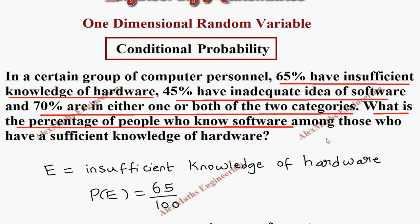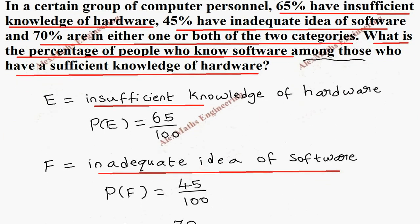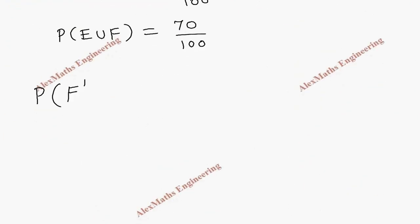Among those who have a sufficient knowledge of hardware. What we have taken here is insufficient knowledge. Among means already we know, and we are looking for people who know software. It means what we know will come in the denominator part, that is E dash. So from E dash, already we know E dash and we are looking for the probability of F dash.